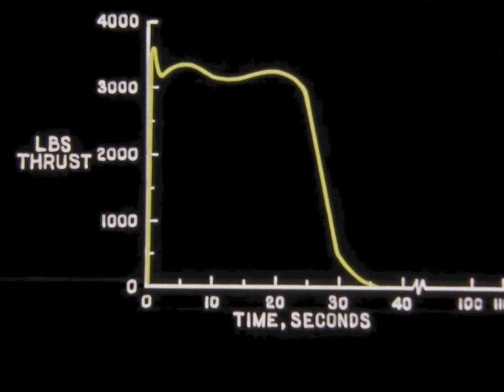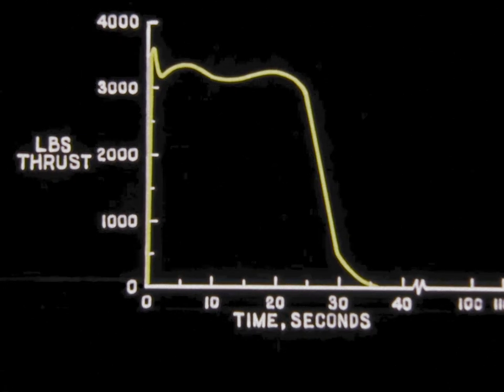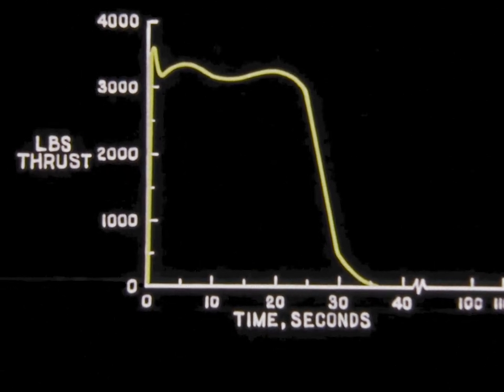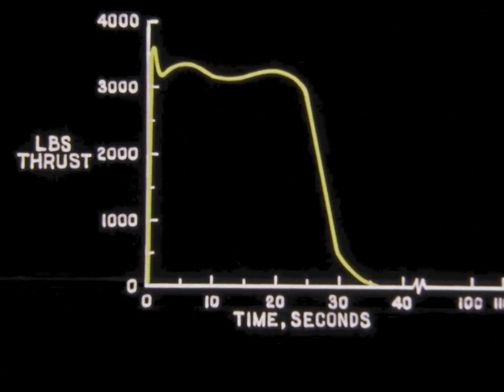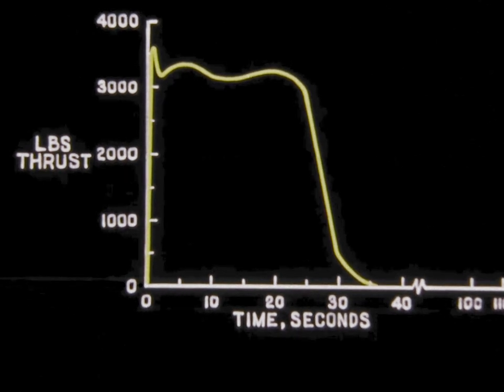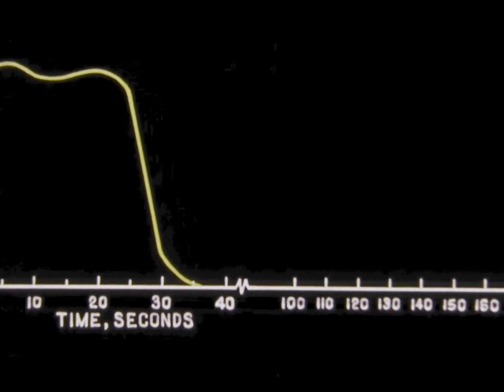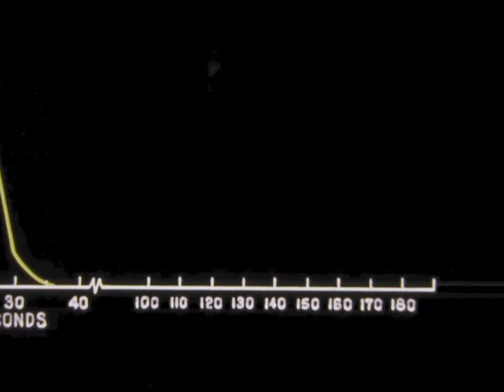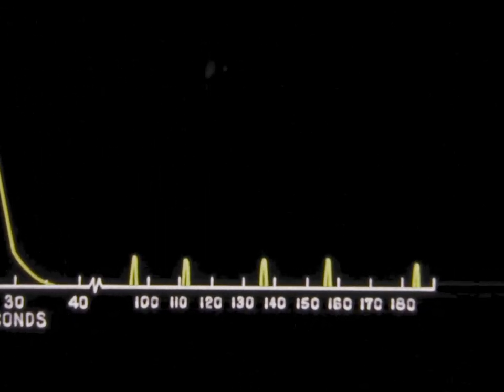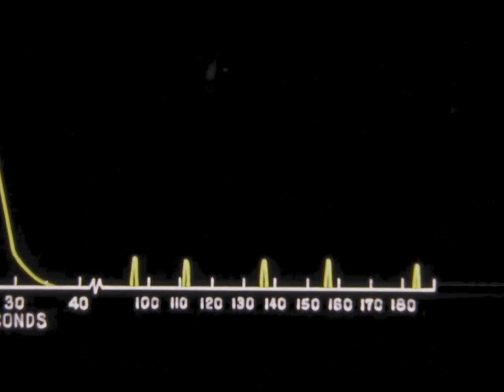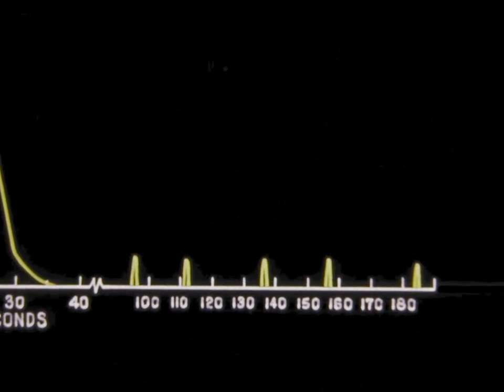This plot indicates thrust versus time for another motor. All six of the motors of this type tested had a continuation of burning after the prescribed cutoff. There had been no indication of this in prior tests. The blips showed that the burst of burning, or chuffing, lasted almost 160 seconds beyond regular cutoff. Each represents an additional burst of 300 to 500 pounds of thrust.